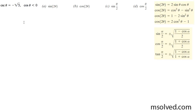Let's find the double angle for the sine and cosine, and the half angle for them as well. We have the secant of theta equal to the negative square root of 5, which is the same thing as 1 over the cosine. And the cosine of theta is less than 0, which means the angle is going to be in quadrant 3.